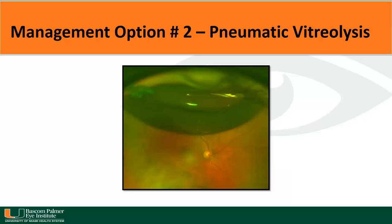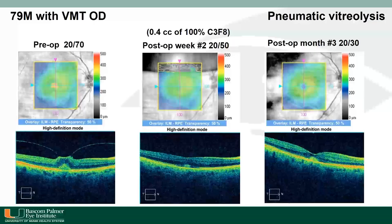The second option for management of vitreomacular traction is pneumatic vitreolysis. This involves injection of a gas bubble, which expands and causes release of the vitreomacular adhesion. Here is an example — a 79-year-old male with vitreomacular traction and 20-70 visual acuity. In the photographs, at one to two weeks following injection of gas, there is still a bubble above but the traction has been relieved, and by month three, visual acuity improved to 20-30 in this patient.